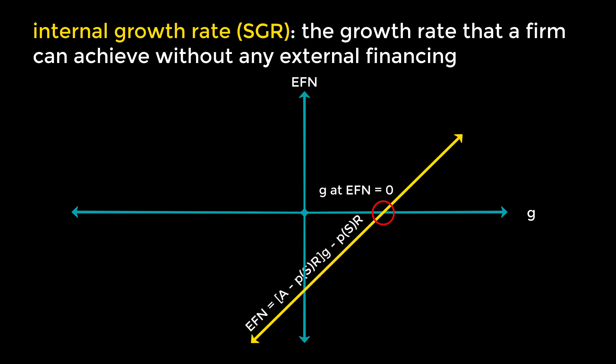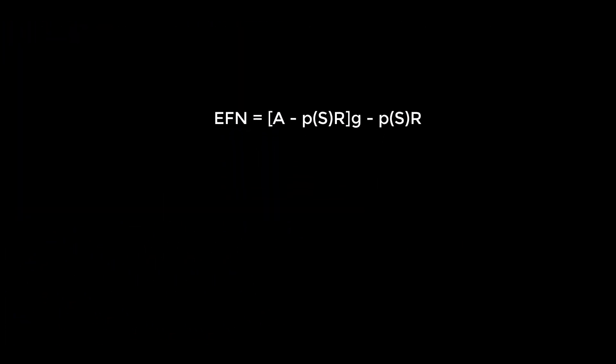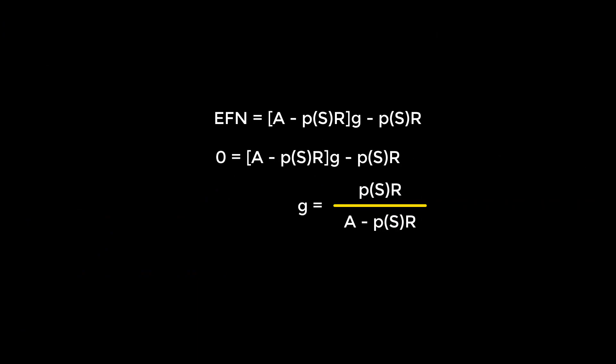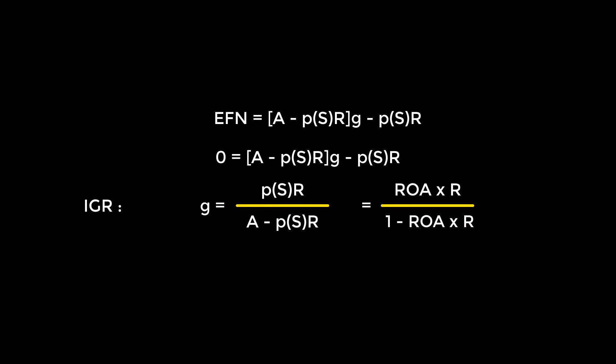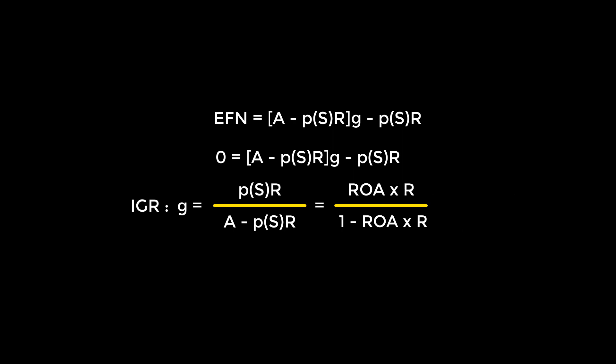But we don't always want to draw out a graph. The way to find this mathematically is by setting EFN to 0 and isolating for G, to get PSR over A minus PSR, and then solving by plugging in our known amounts. The expression for internal growth rate can be restated as IGR equals ROA times R over 1 minus ROA times R.